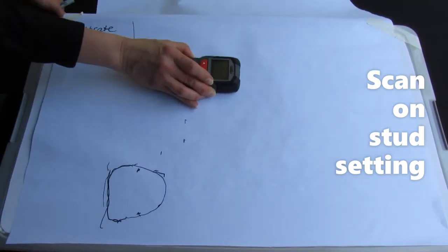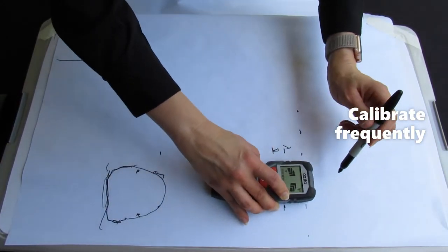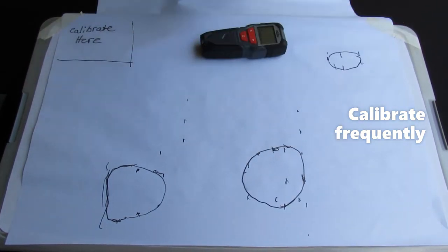Aerial surveys use a regular back and forth scanning pattern. This is a good idea when simulating the activity too. Results will be better if the stud finder is frequently calibrated and boundaries checked twice.